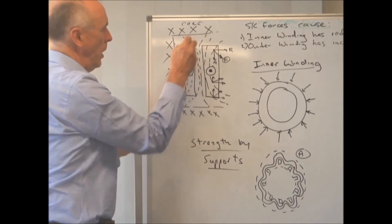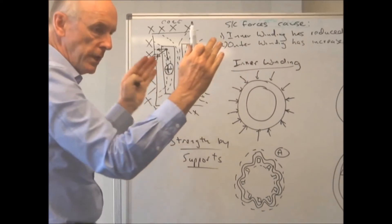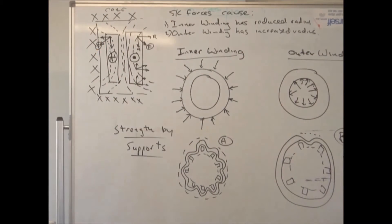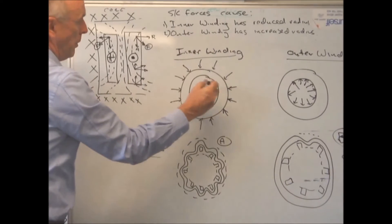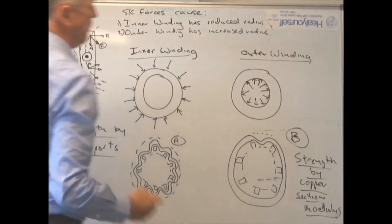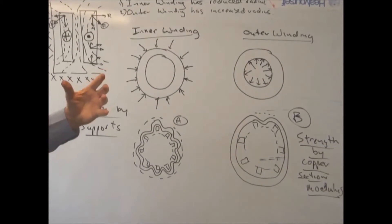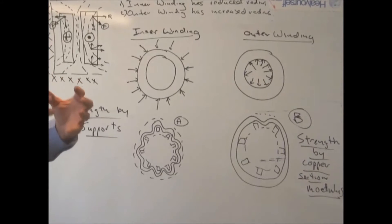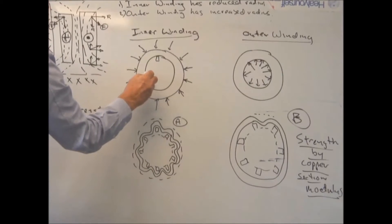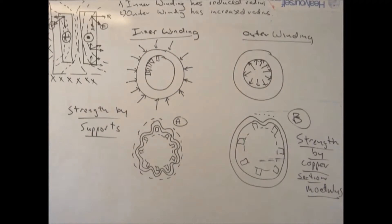Similarly, the inner winding is pushed down and compressed inward — its radius is being reduced. The outer winding's radius is increasing due to the hoop stress, the bursting force. So the inner winding is in compression and the outer winding is in tension, being pulled apart. Depending on how you support your winding, there are two methods: relying on the shear section modulus or strength of the copper or aluminium, or adding more supports inside the winding to reduce the span between support points.